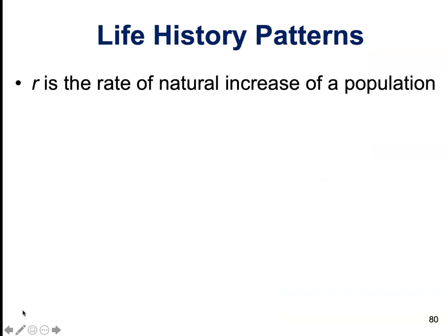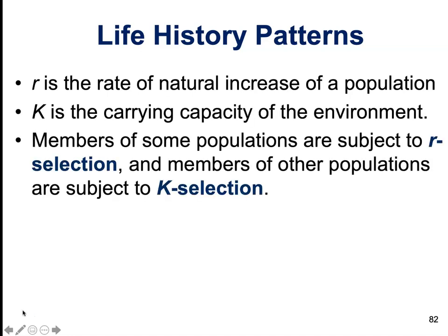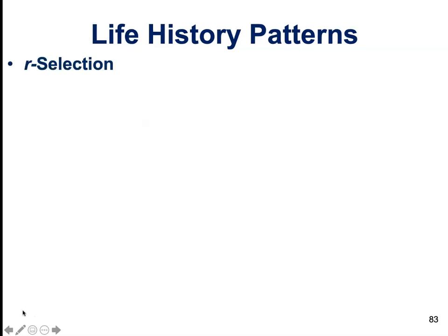When talking about life history patterns, we characterize organisms using two categories: R and K. R is the rate of natural increase of a population, and K is the carrying capacity of the environment. Members of some populations are subject to either R selection or K selection.